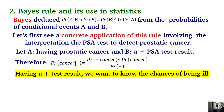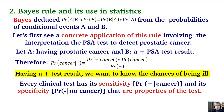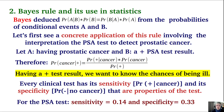Having received a positive test, what we really want to know is not the test result we already have, but the probability of actually being ill. Every clinical test has a sensitivity and specificity. Sensitivity is the probability of a positive test given you have the disease; specificity is the probability of a negative result given you are not ill. For the PSA test, its sensitivity is 0.14 and its specificity is 0.33.